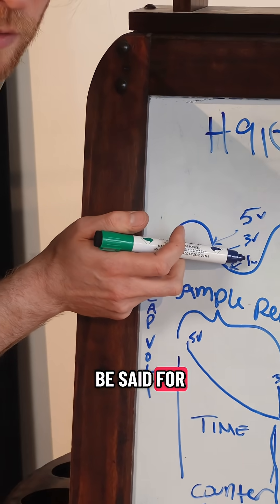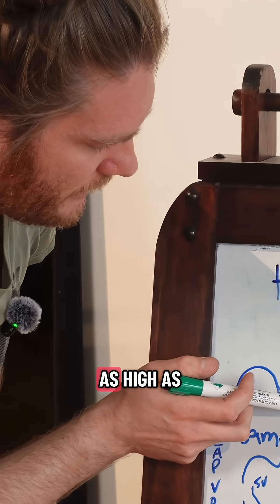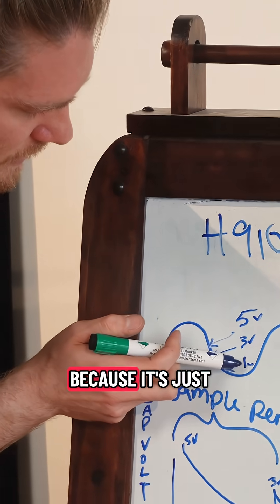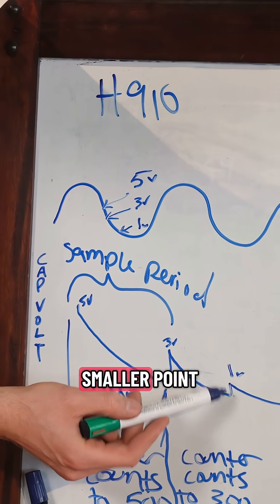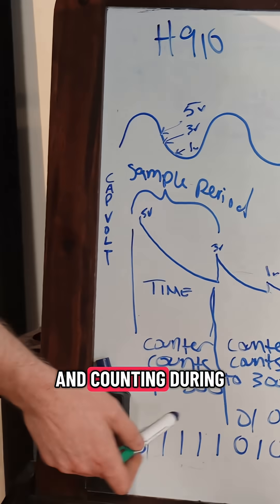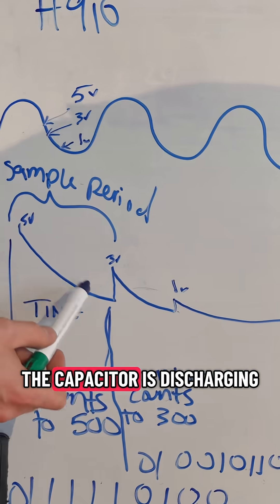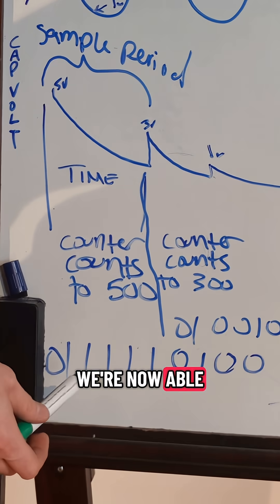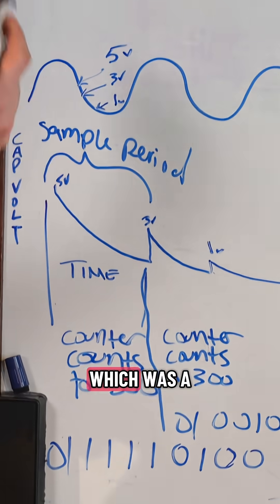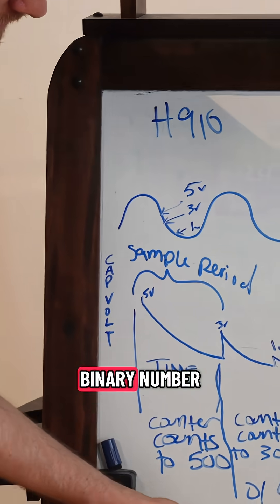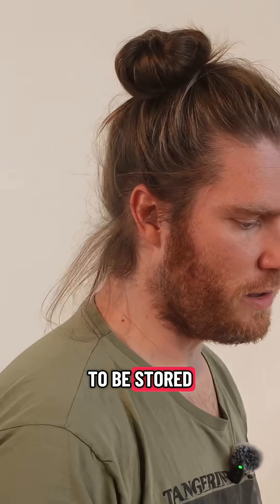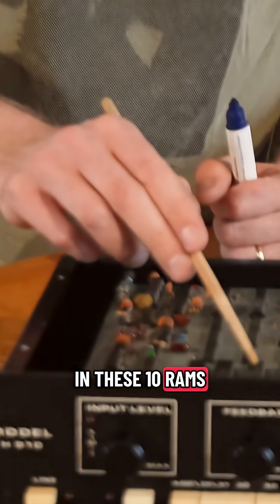The same will be said for 1 volt — it won't be able to count as high as the 3 volt count because it's just starting from a smaller point. So by taking this number and counting during the time that the capacitor is discharging, we are now able to represent the audio, which was a voltage, by a binary number. And that binary number is going to be stored in these 10 RAMs.